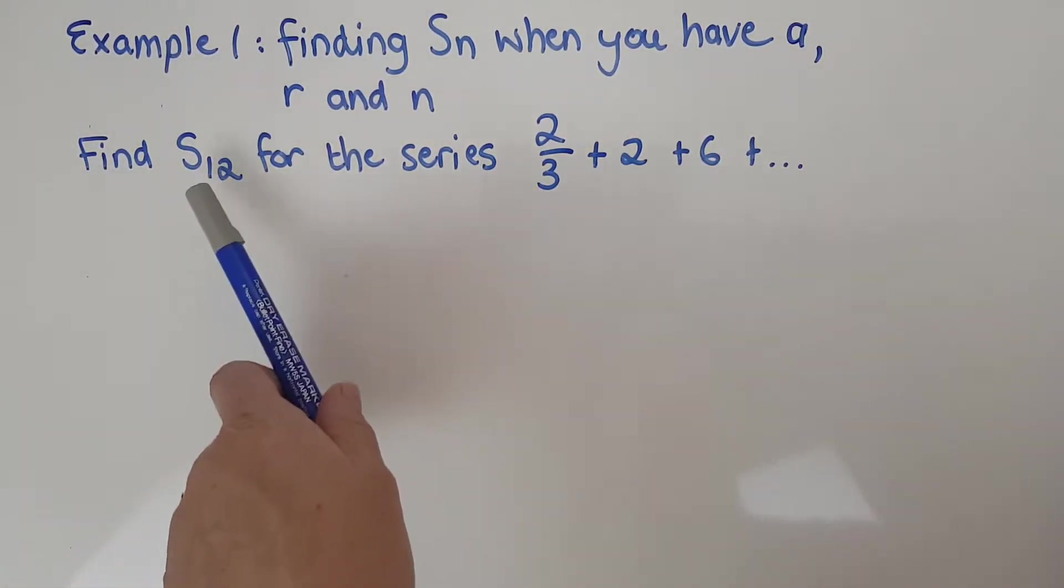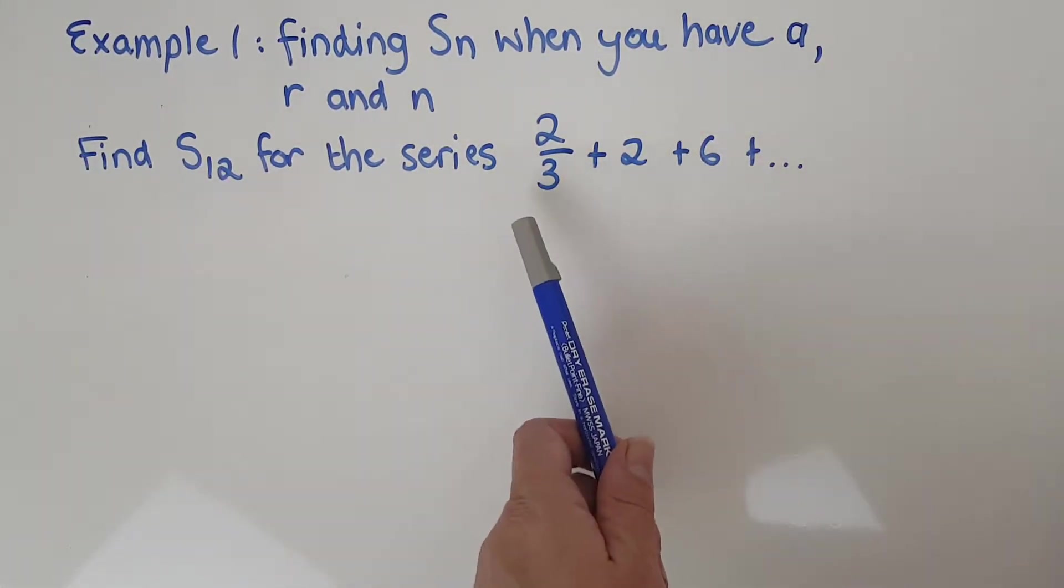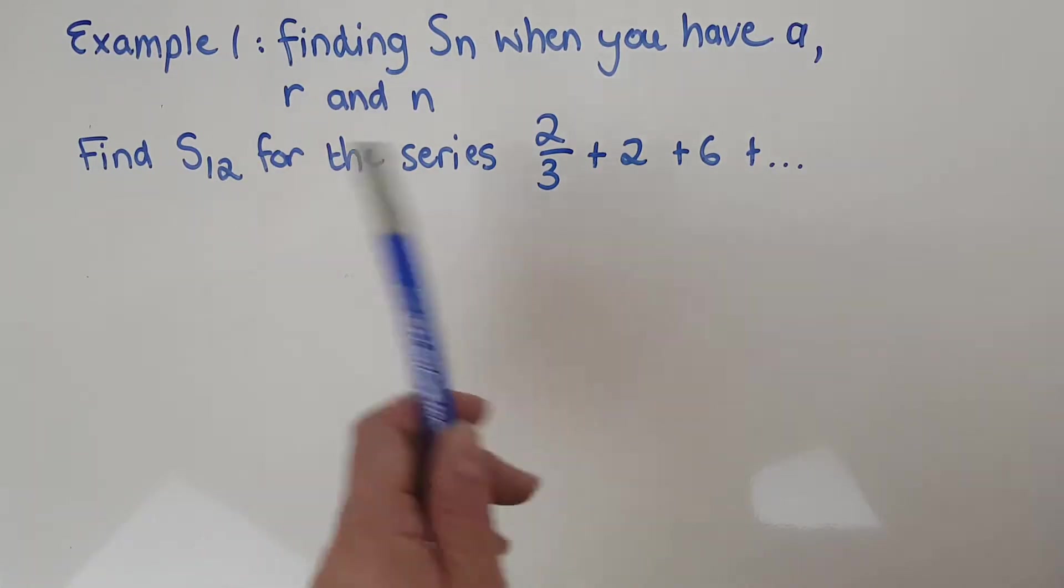Find the sum to 12 terms for the series. And obviously you can get all of these things. The sum to 12 terms. So I'm going to write this down like it's a finance question. I'm going to put everything down that I could have, and then everything down that I do have.